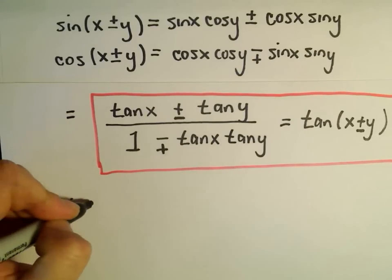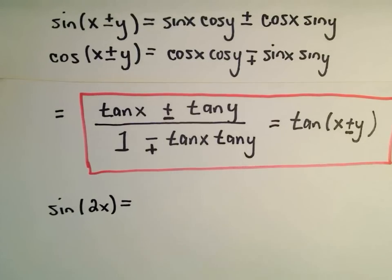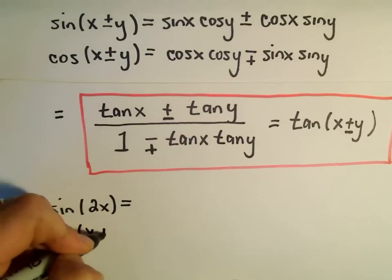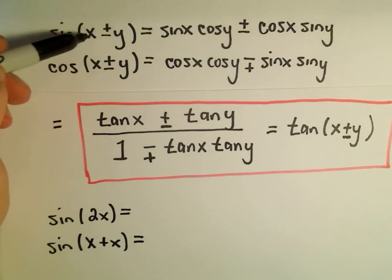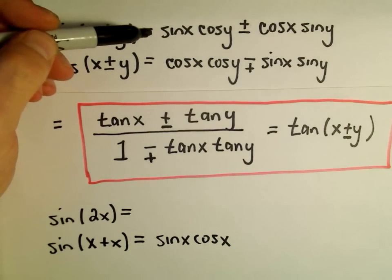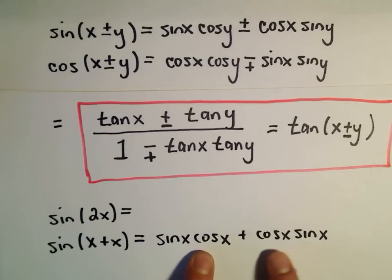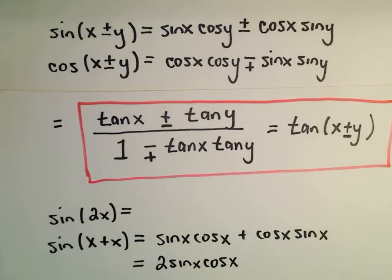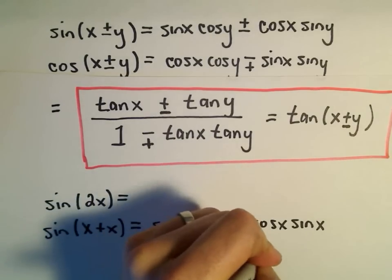Let's find an identity for sine of 2x — definitely a very common identity you'd want to be familiar with. The idea is we can write sine of 2x simply as sine of x plus x, and now we just use our identity: sine x times cosine x plus cosine x times sine x. We've got a sine times cosine and a sine times cosine, so really we have 2 sine x cosine x. And there's another identity: sine of 2x equals 2 sine x cosine x.